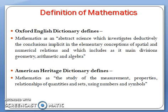Definition of mathematics: The Oxford English Dictionary defines mathematics as an abstract science which investigates deductively the conclusions implicit in the elementary conceptions of spatial and numerical relations, and which includes as its main divisions geometry, arithmetic, and algebra.